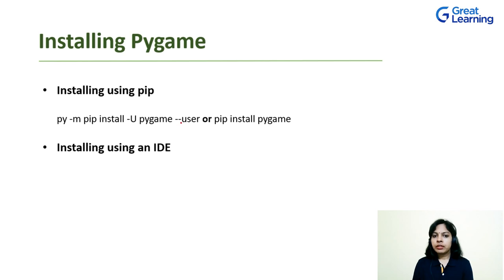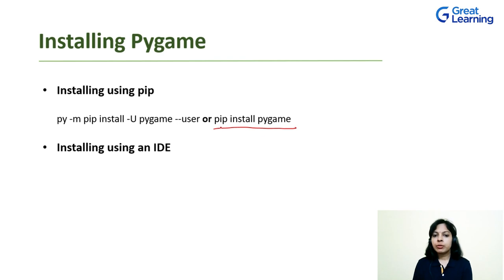Or more simply, if you have the latest version of Python, just open the command prompt and type: pip install pygame. Make sure you already have Python installed; otherwise it will give you an error saying PIP is not recognized. Without changing any directory or folder path, simply open command prompt and write pip install pygame. This will successfully install Pygame to your laptop.